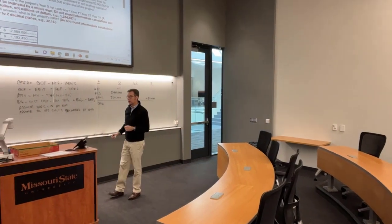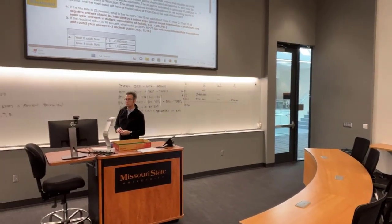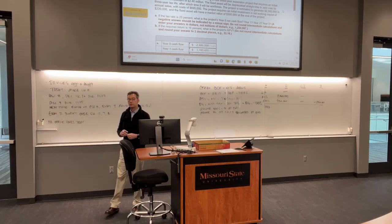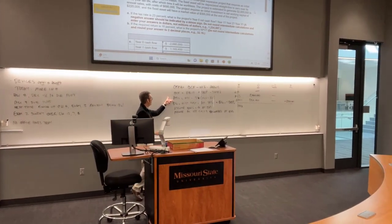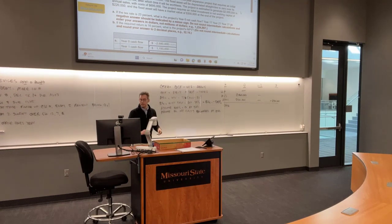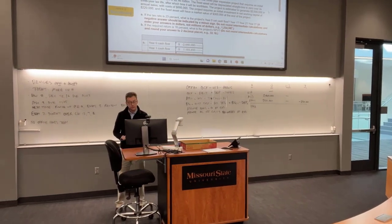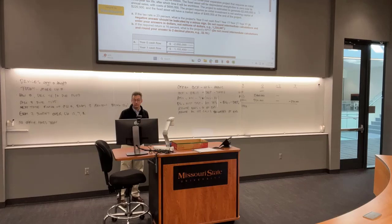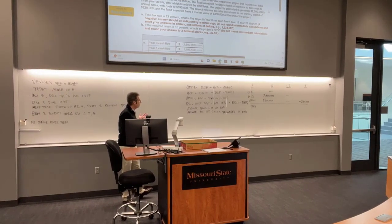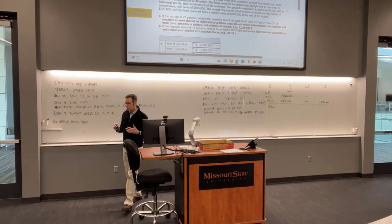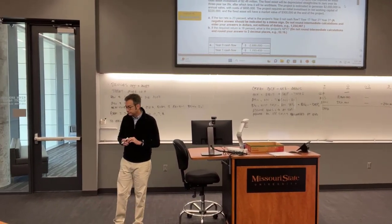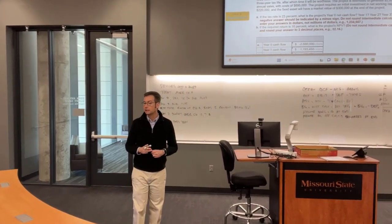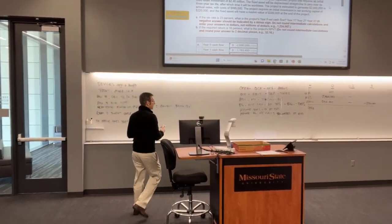So the two things we have to determine are operating cash flow — which goes in years one-and-two and year three — and net capital spending at the end. To determine net capital spending at the end, we need the after-tax salvage value. They tell us the market value of the machine at the end is 300,000 and the tax rate is 23%. The book value — since it's straight-line to zero — is zero.